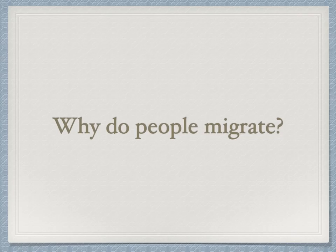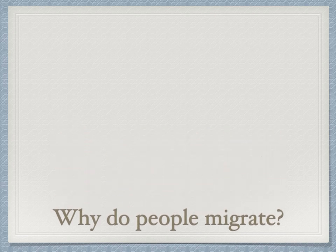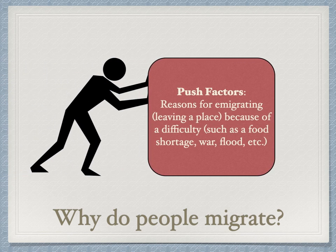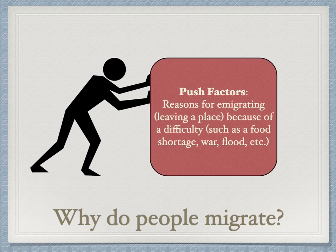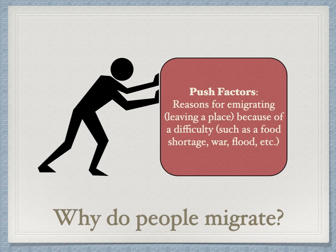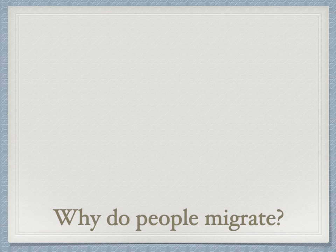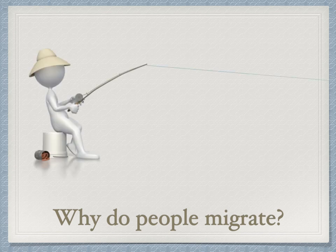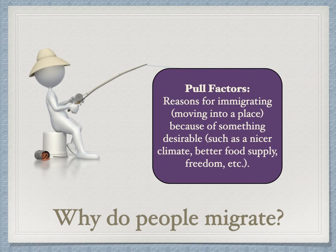So why do people migrate? There are two major reasons. Push factors are reasons for leaving a place because of a difficulty — things like food shortage, war, or flooding. Pull factors are reasons for moving into a place — positive things like a nicer climate, better food supply, or freedom. Push factors are negative; pull factors are positive.